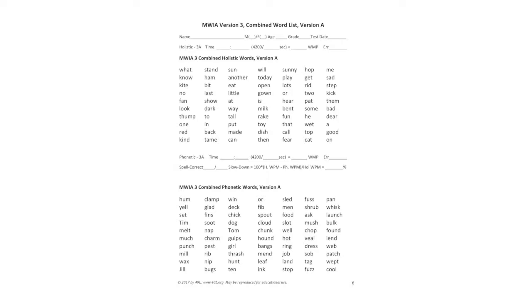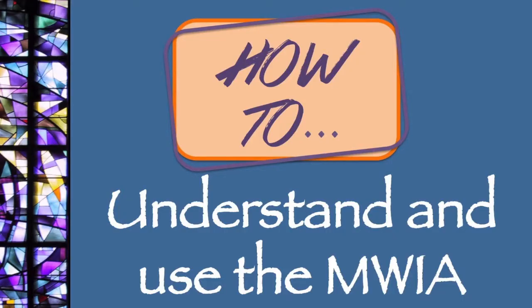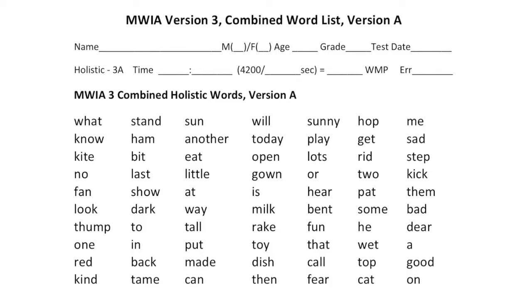There is detailed information on the test, and also a YouTube playlist with more videos about the MWIA. You need to give the 40L Quick Screen Reading Grade Level test first because you give a different version of the MWIA depending on the student's reading grade level.